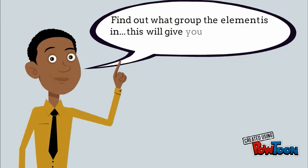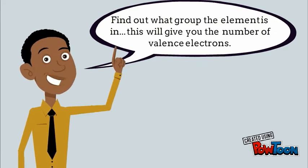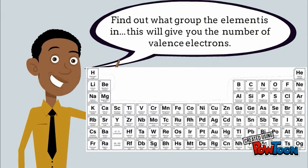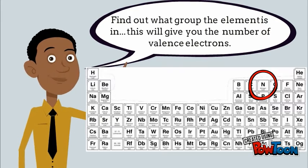The first step is to find out what group the element is in. This is going to give you the number of valence electrons. So if we look at a periodic table and pick out an element, let's pick out nitrogen here. Nitrogen is in the fifth column.